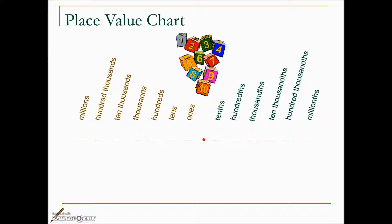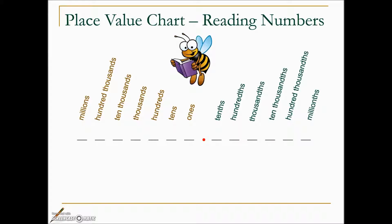It's important to know these place values when it comes to rounding numbers. Next we'll take a look at practicing reading some numbers. This first number is 0.3, and if we read it correctly, we read the number and the last place value of the digit furthest to the right. So the first number is going to be three tenths.